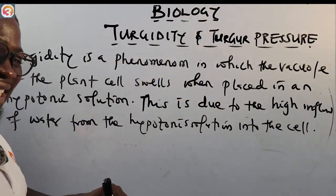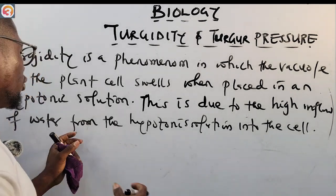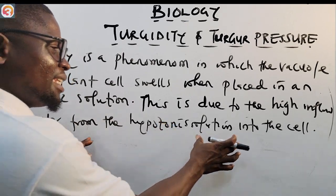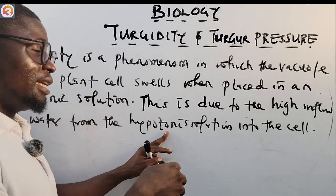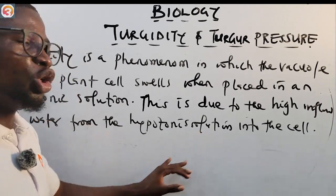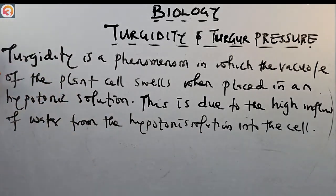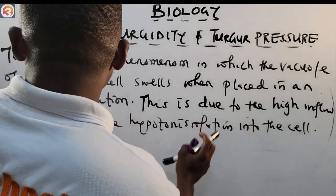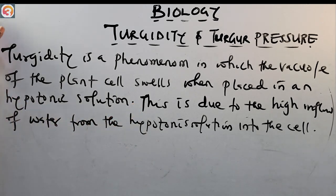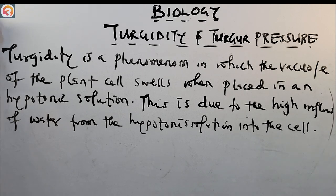As the high inflow of water from the hypotonic solution enters the cell, the cell begins to swell. However, the cell wall prevents the cell from bursting despite the swelling. So turgidity occurs in plant cells because the cell wall is present, and it prevents the cell from bursting.